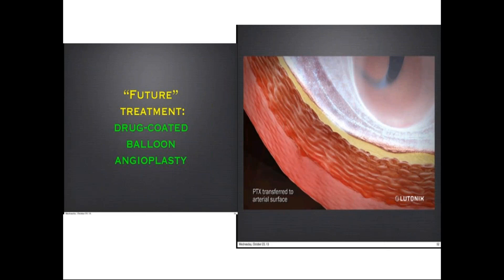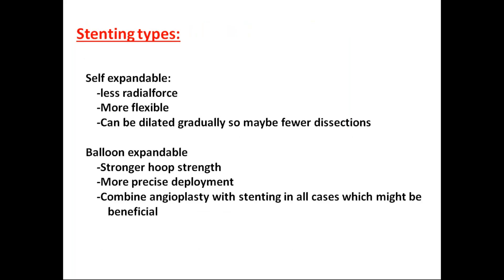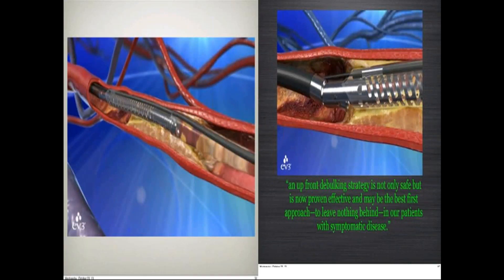Future treatment includes drug-coated balloon angioplasty. Complications of angioplasty include early arterial dissection, vessel rupture, cholesterol emboli, and issues from stents that are too long or too short. Late complications include stent migration, stent fracture, intimal hyperplasia, and restenosis. Stent types include self-expanding metallic stents, which are more flexible with fewer dissections, and balloon-expandable stents with stronger radial force and more precise deployment. Drug-eluting stents may be best as a first approach to leave nothing behind in symptomatic disease.